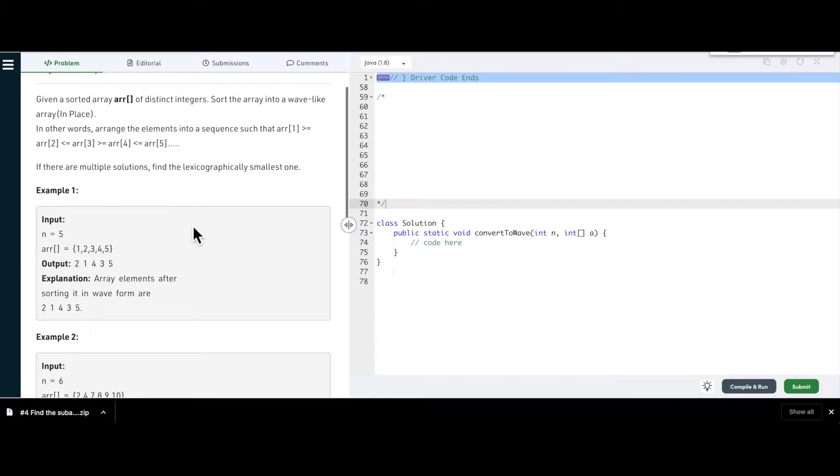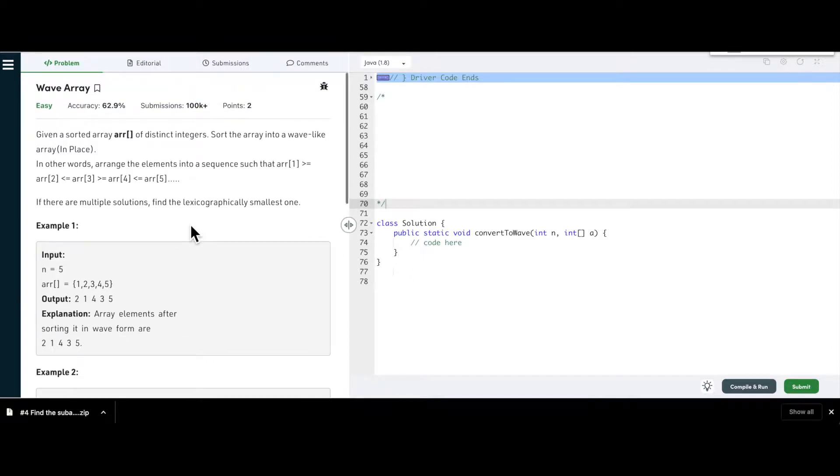Hello and welcome everyone to my channel Code with Ease. As part of the array series, today we are going to solve this question called Wave Array. In this problem, the elements should be arranged in a sequence where the first element is greater than or equal to the second element.